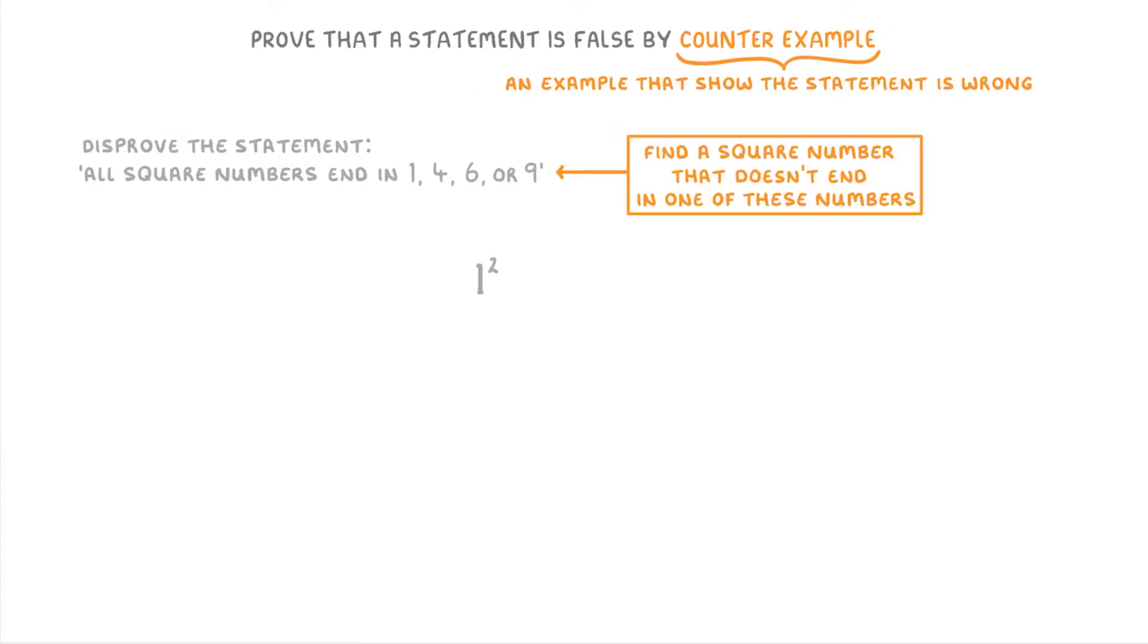So for this question, we just need to find a square number that doesn't end in one of these numbers. So we could just start with 1 squared, which is 1, and work our way through the square numbers, and we find an example that disproves the statement.